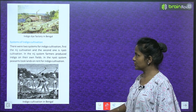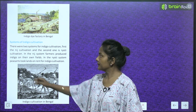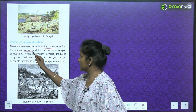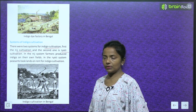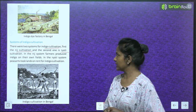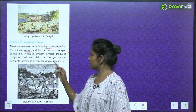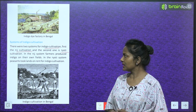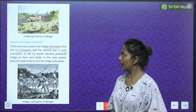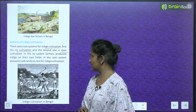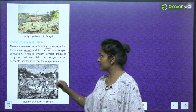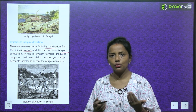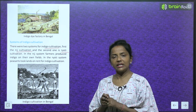There were two systems for indigo cultivation. The first was the Niche system, where farmers produced indigo on their own fields — land they directly controlled. The second was the Raiati system, where peasants took lands on rent for indigo cultivation.